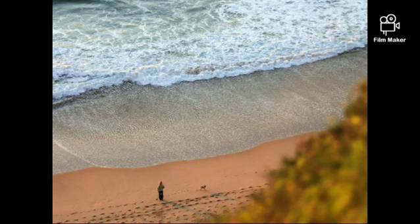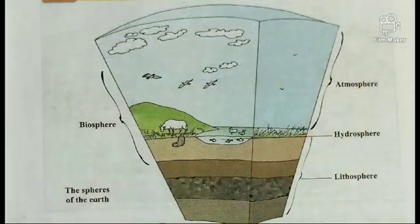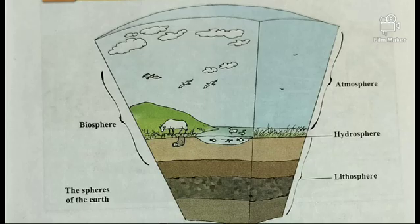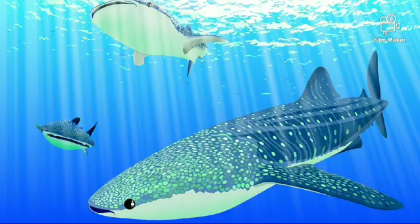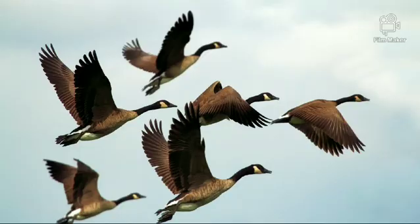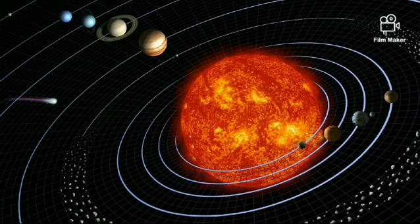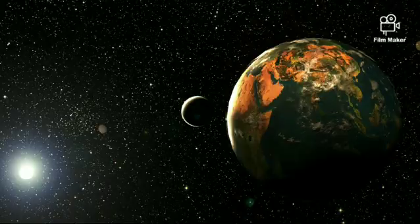On the surface of the earth, we find land in some places and water in others. The earth is surrounded by the atmosphere. There are living things on land, in water, and in the air. The sun is the cause of many natural processes on the earth.